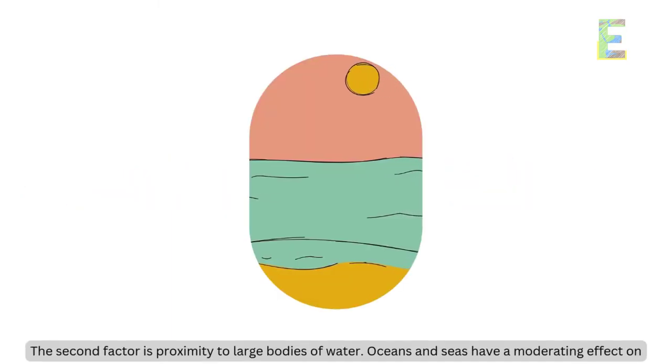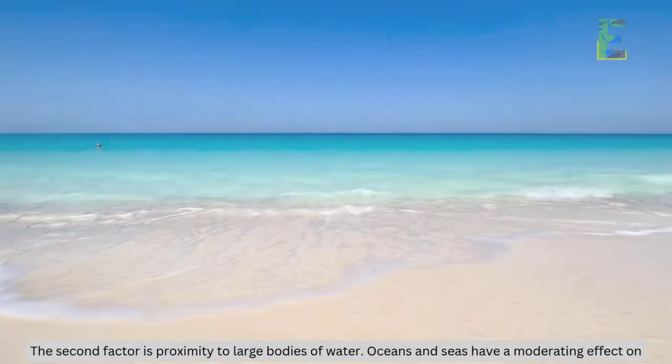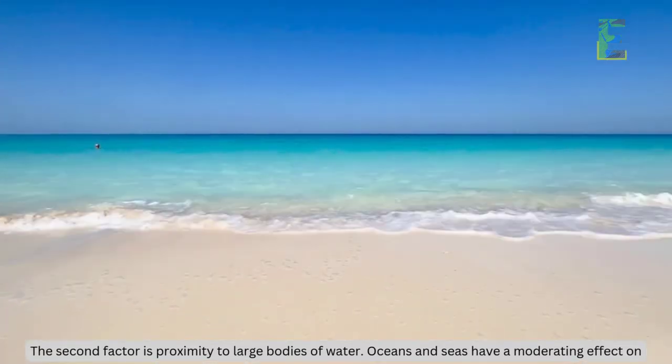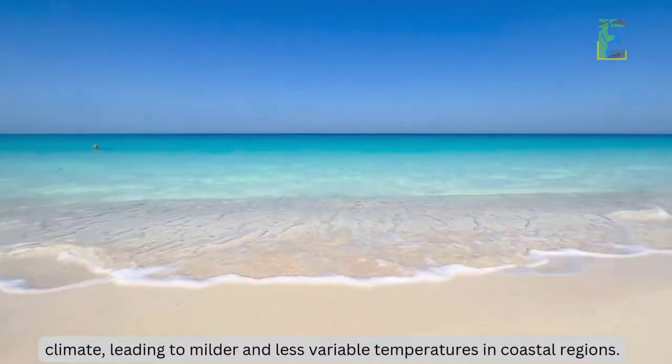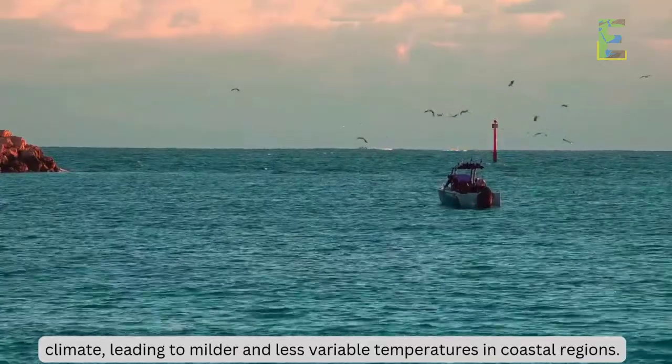Proximity to water. The second factor is proximity to large bodies of water. Oceans and seas have a moderating effect on climate, leading to milder and less variable temperatures in coastal regions.